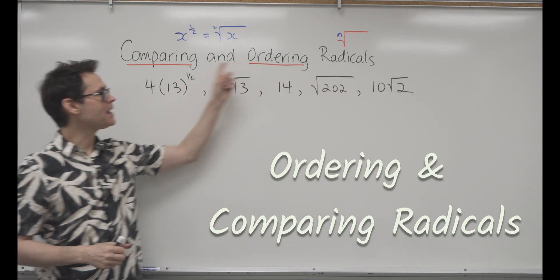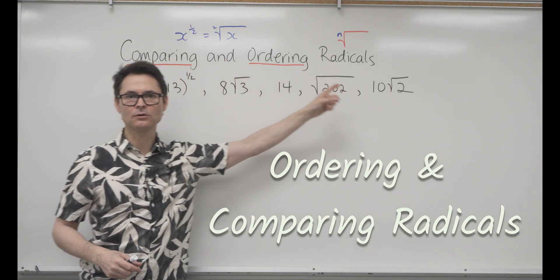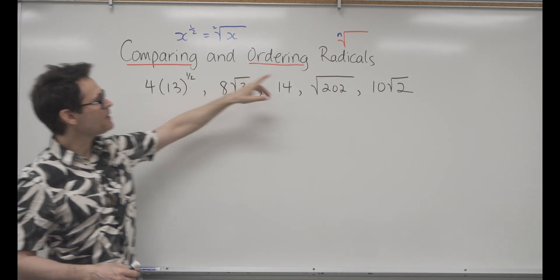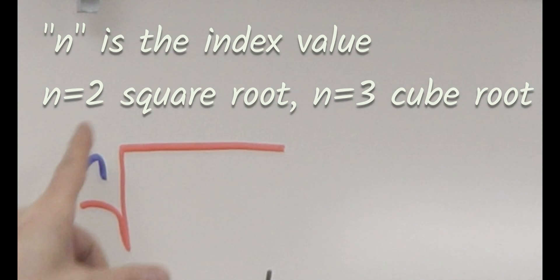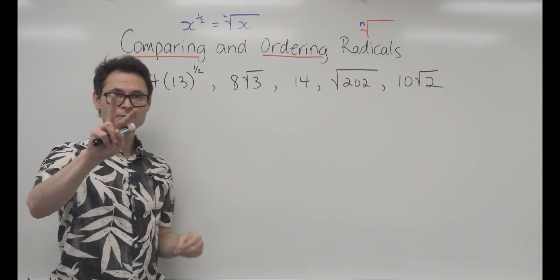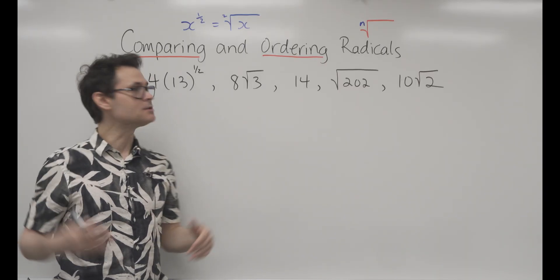We're going to talk about comparing and ordering radicals. Make sure that you know a radical is this red symbol, and every radical carries an index, the letter N. It's 2 for square root, 3 for cube root, and so on.